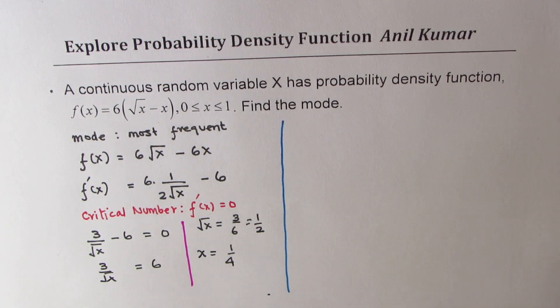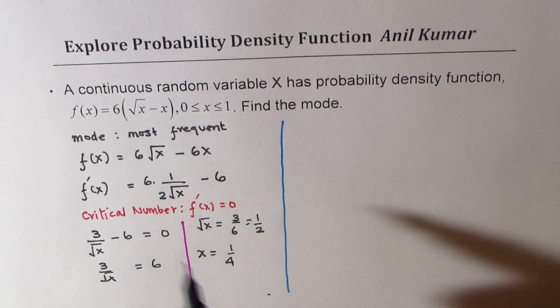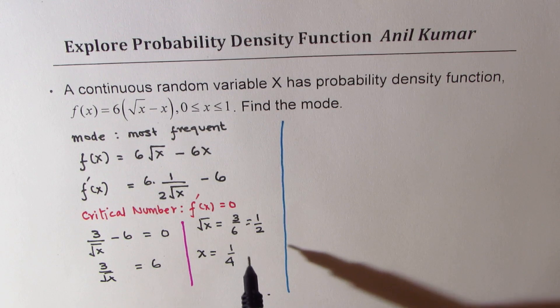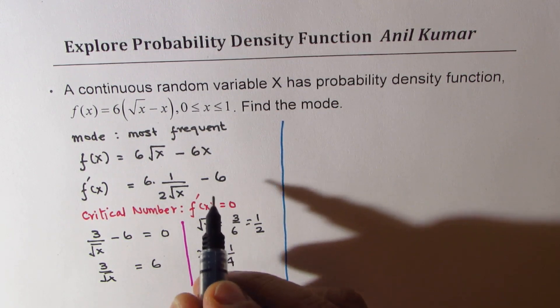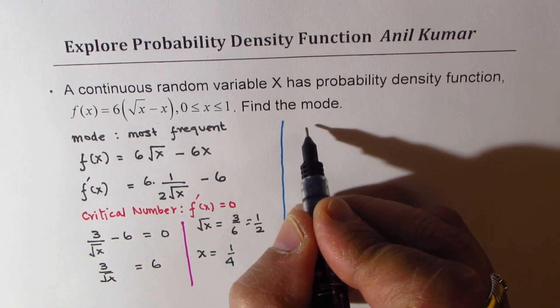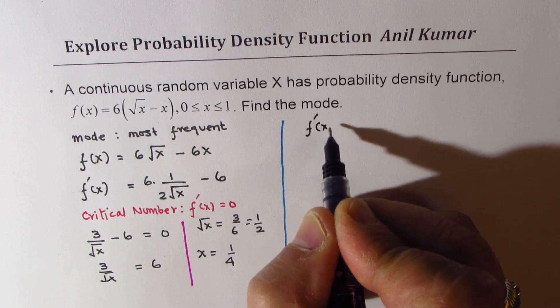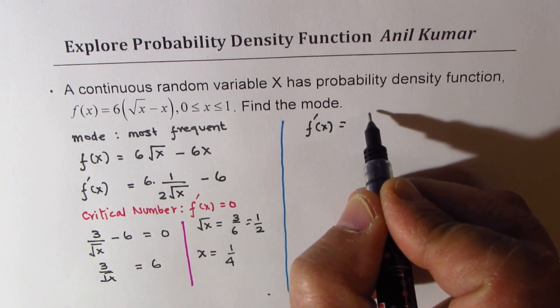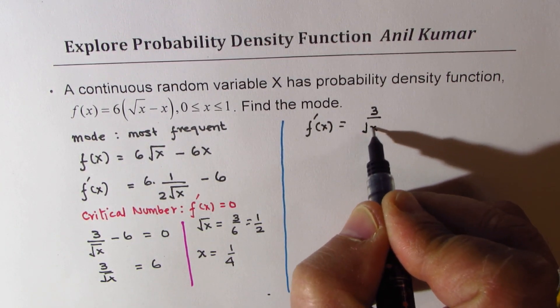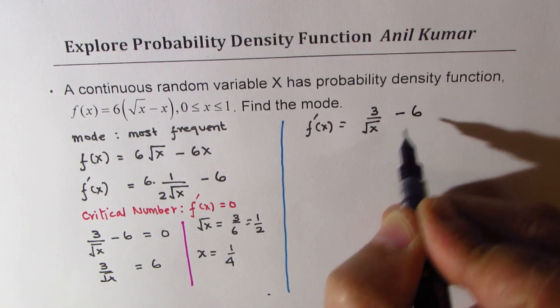Now we need to verify that this really represents a maximum. For that, let's find the second derivative. The second derivative, we have f'(x) as 3 over square root x minus 6.